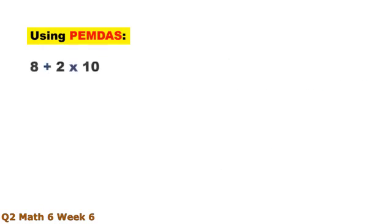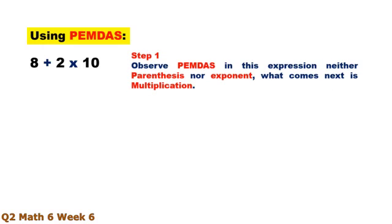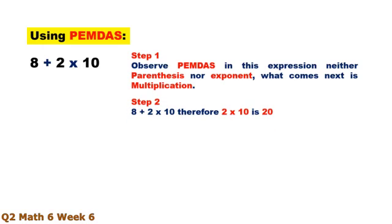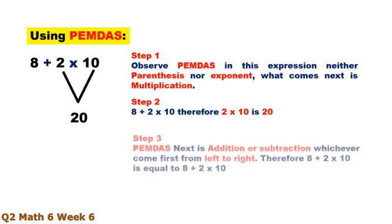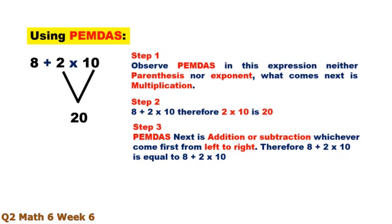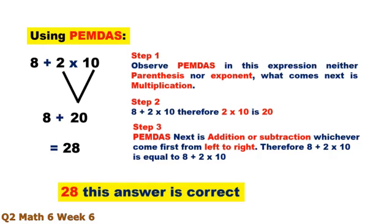Using PEMDAS: 8 plus 2 times 10. Step 1 — observe PEMDAS in this expression: neither parenthesis nor exponent. What comes next is multiplication. Step 2 — 2 times 10 is 20. Step 3 — PEMDAS next is addition or subtraction, whichever comes first from left to right. Therefore, 8 plus 20 equals 28. So 8 plus 2 times 10 is equal to 28.